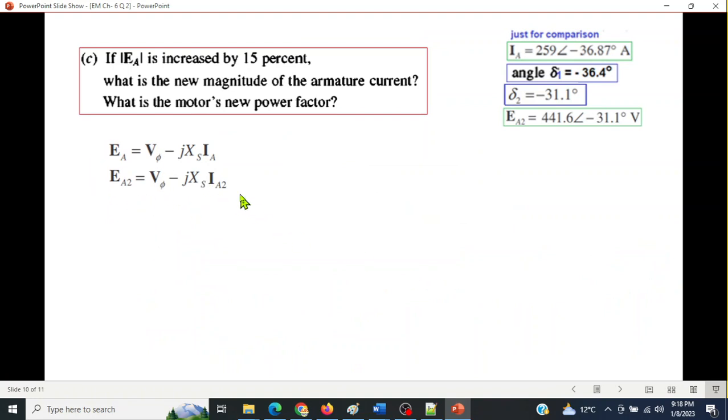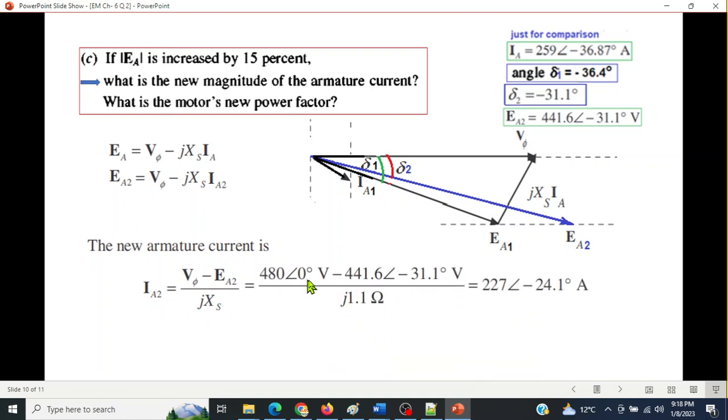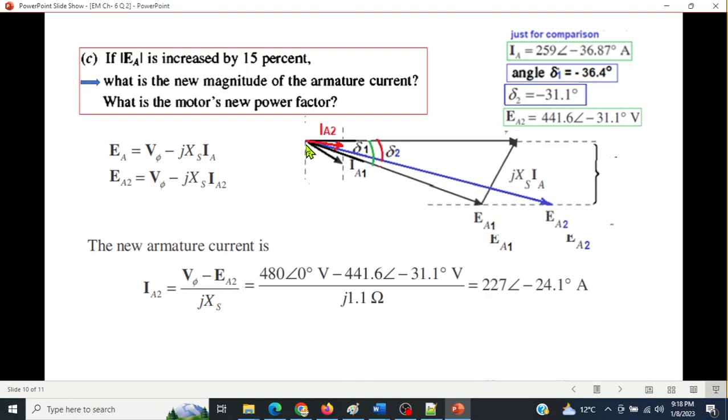And now we'll use this formula to find the current Ia2. Keep this diagram in mind. What is the new magnitude of the armature current? So from here, this is the new magnitude. We know all these values. So we'll plug in the values. And so Ia2 is 227 ampere at minus 24.1 degrees. So if we plot Ia2, it will be somewhere here, because the angle has further reduced. It is minus 24.1, so it will go up. Remember, this one delta 2 will minus 31.1. So it will be further up, because that is minus 24.1. So this is how it will look like.